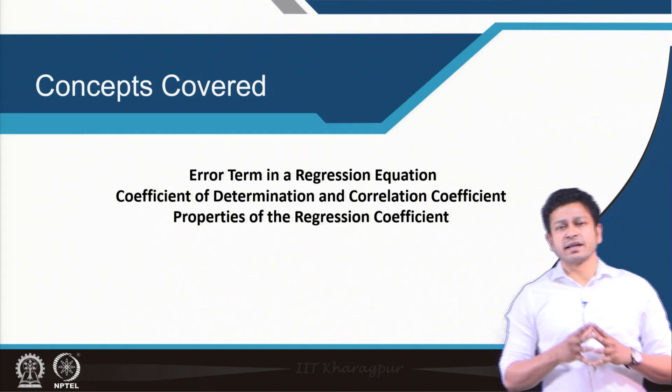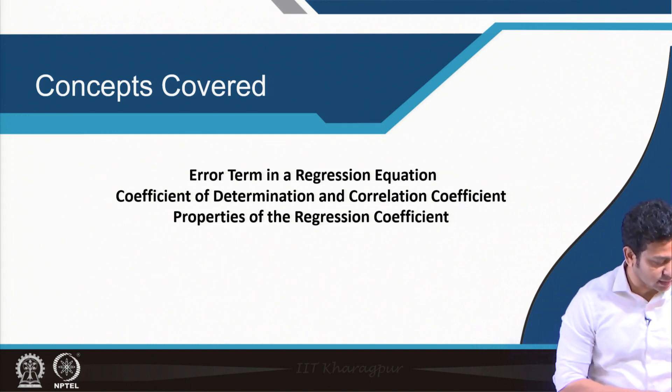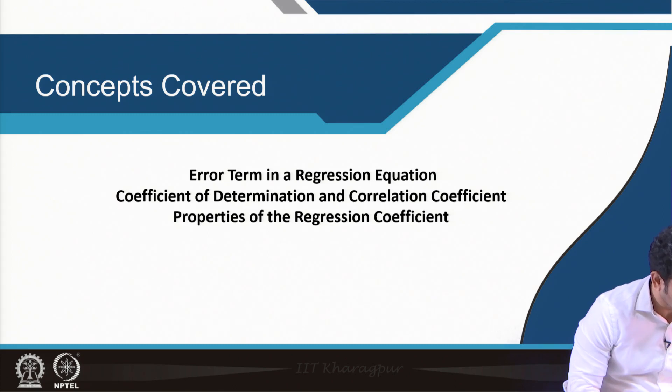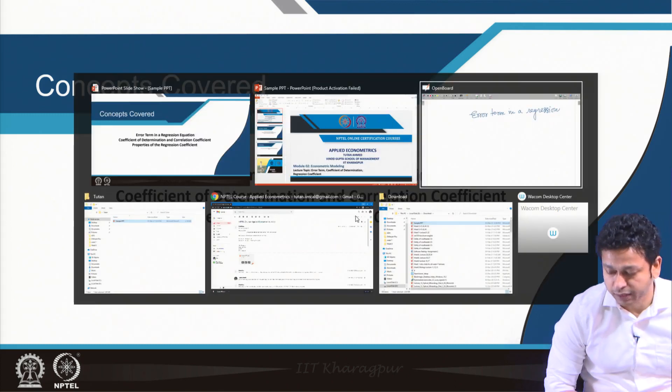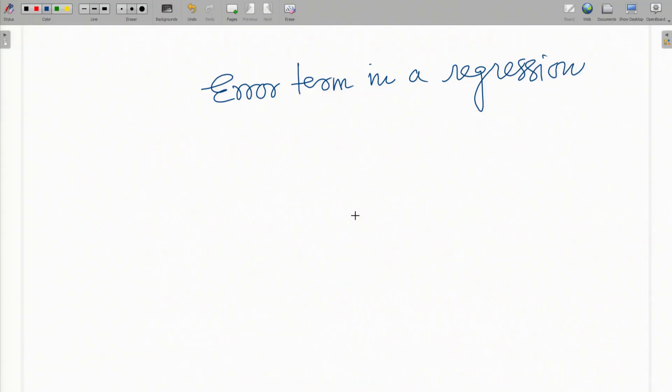Let us start with error term in regression equation. When we write a regression equation, in general we write something like this. I will use the whiteboard. In general, a regression equation would look like this: if Y is the dependent variable and I have a β₁ coefficient, β₂X, and there is an error term u.